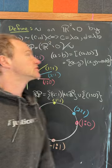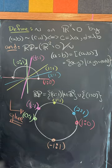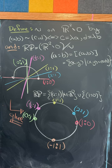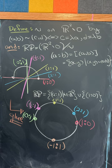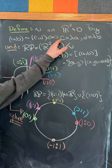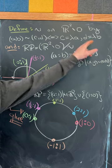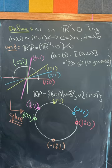Let's look at the real projective line. We want to start with the real plane minus the origin and then define an equivalence relation tilde by (a,b) is equivalent to (c,d) if and only if c is a multiple of a and d is the same multiple of b.